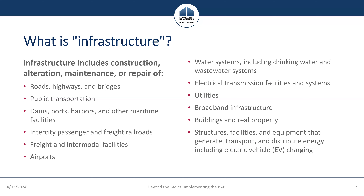Certain infrastructure projects are subject to the BABA once the obligation date has passed, in accordance with HUD's phased implementation waiver, unless the project is covered by a general waiver. For the purposes of the BABA, an infrastructure project is defined as any project that includes construction, alteration, maintenance, or repair of infrastructure, regardless of whether infrastructure is the primary purpose. The requirement to use American-made iron and steel, construction materials, and manufactured products applies to CPD program funding for infrastructure projects, and a list of covered CPD programs can be found in the CPD BABA implementation notice.